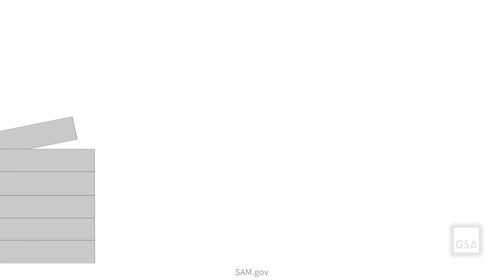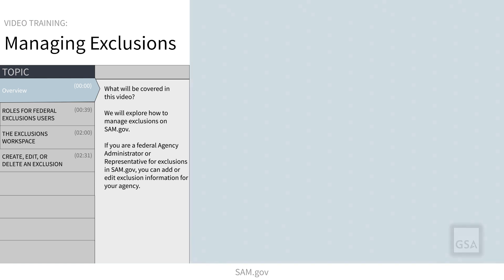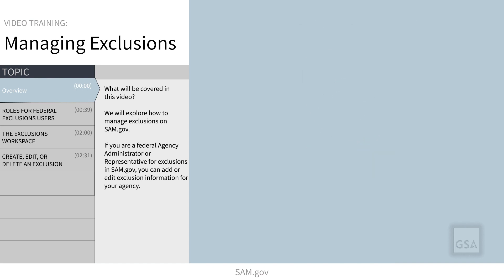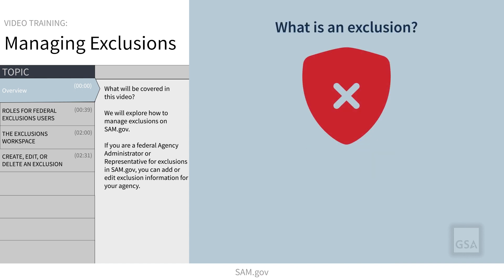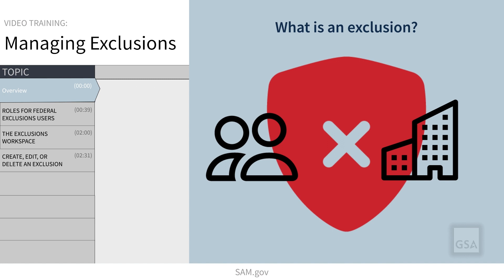If you are a federal agency administrator or representative for exclusions in SAM.gov, you can add or edit exclusion information for your agency. In this video, we will explore how to manage exclusions on SAM.gov. An exclusion is a suspension or debarment of an individual or entity that is prohibited, restricted, or otherwise excluded from doing business with the federal government.